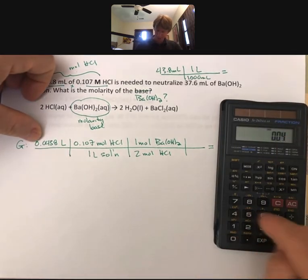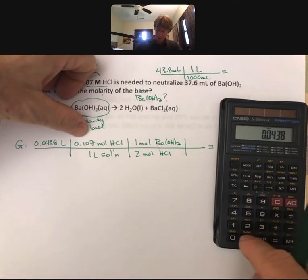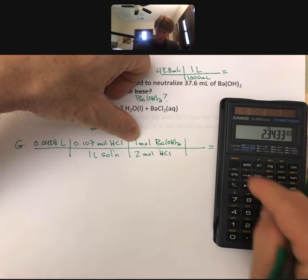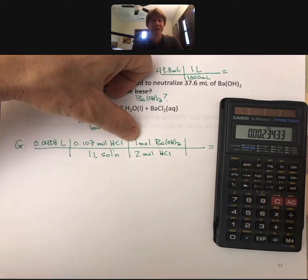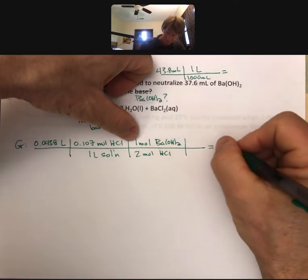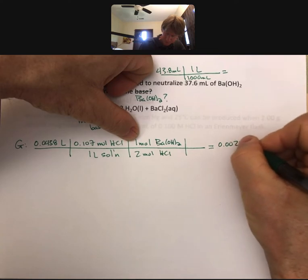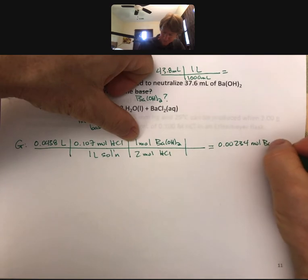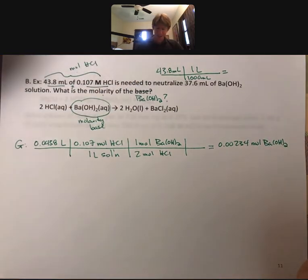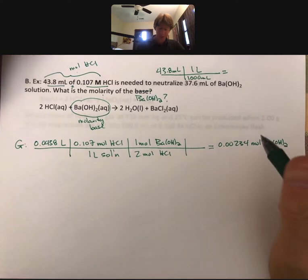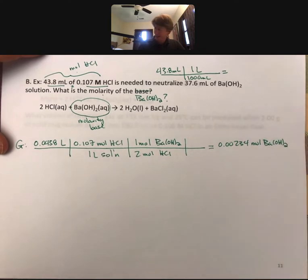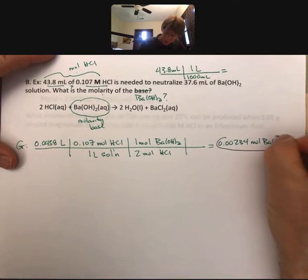Calculating moles of barium hydroxide: 0.0438 × 0.107 ÷ 2 = 0.00234 moles of barium hydroxide. Since I didn't have a molarity to use as a final conversion, I couldn't do the same last step as the previous problem. But now I have moles of barium hydroxide.